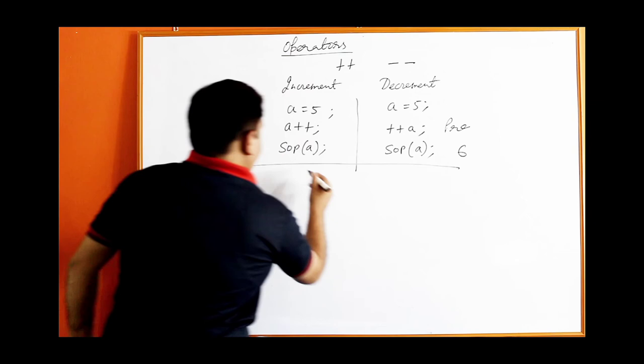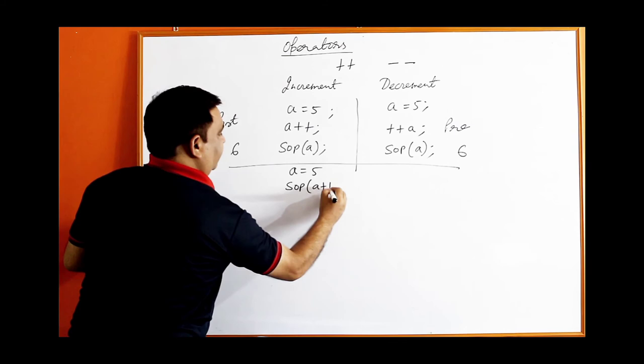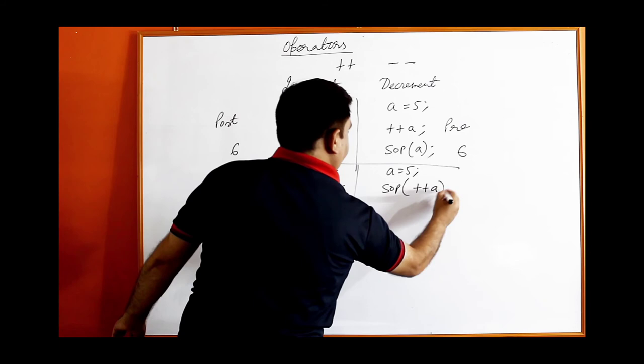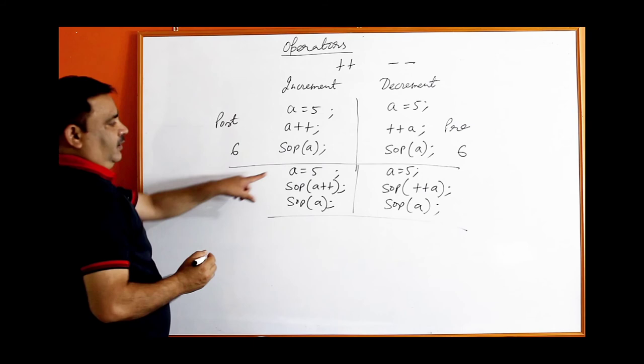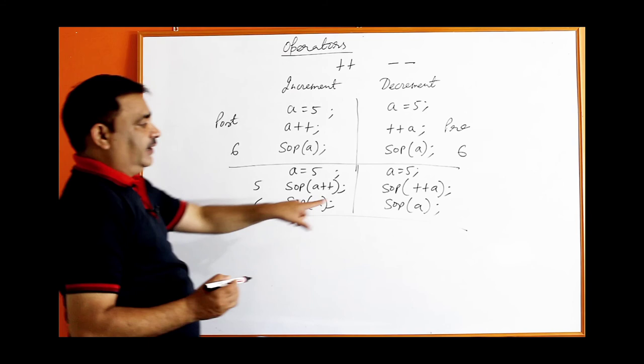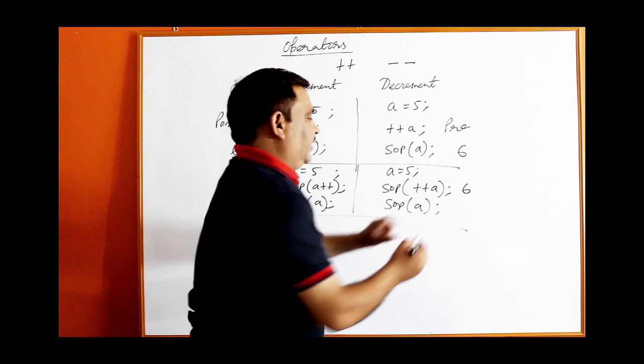The difference: if I write print(a++) with a equal to 5, it prints 5 first and then increments — when we come to the next statement a is 6. If I write print(++a), it increments first then prints 6. So post-increment uses the current value first then increases; pre-increment increases first then uses the new value.